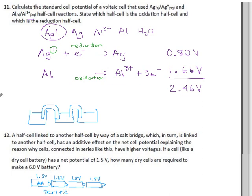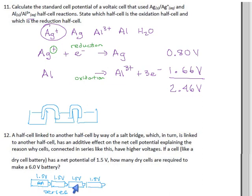When batteries are in series, you add up their voltages, which is nice. The bad news is all these batteries are going to run down at the same time and they'll all die at once. So you get a lot of voltage, but you don't get as much battery life when you stack batteries this way.